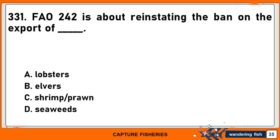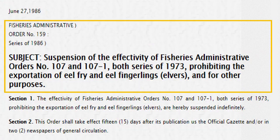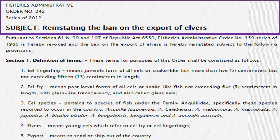Fisheries Administrative Order No. 242 is about reinstating the ban on the export of: A. Lobsters. B. Elvers. C. Shrimp or Prawn. D. Seaweeds. The correct answer is B. Elvers. The export of elvers was first banned in 1973 through FAO 107. The ban was suspended in 1986 through FAO 159. The ban on export of elvers or eel larvae and fingerlings was reinstated pursuant to FAO No. 242 in 2012.